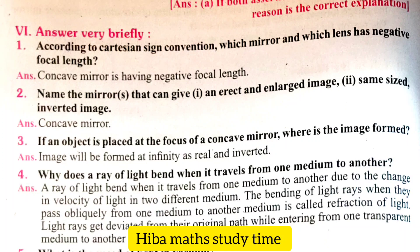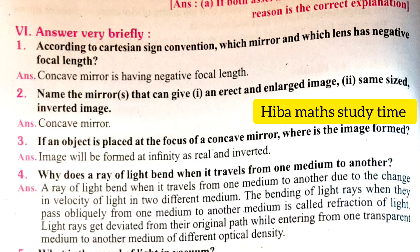Why does a ray of light bend when it travels from one medium to another? A ray of light bends when it travels from one medium to another due to the change in velocity of light in two different media. The bending of light rays when they pass obliquely from one medium to another is called refraction of light. Light rays get deviated from their original path while entering from one transparent medium to another medium of different optical density.